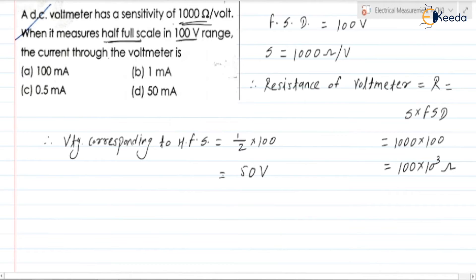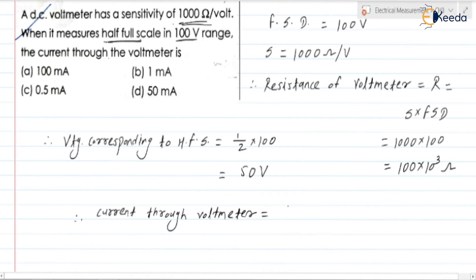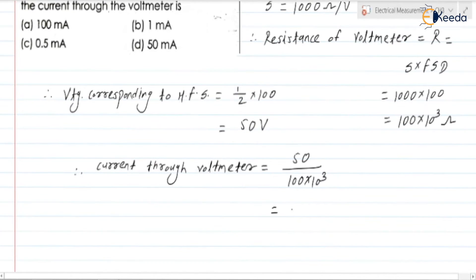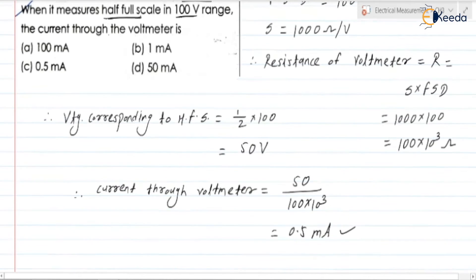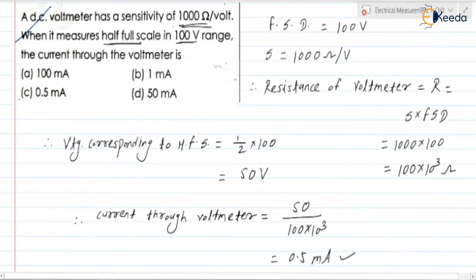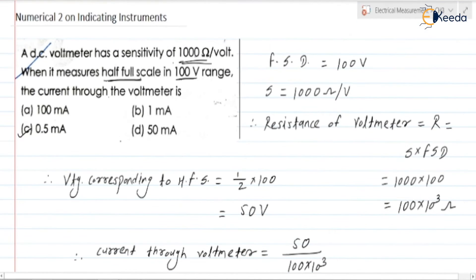We know resistance and voltage. Therefore, current through the voltmeter = half full scale voltage / resistance = 50 / (100 × 10³) = 0.5 milliampere. So the correct option is option C. This is a straightforward question.